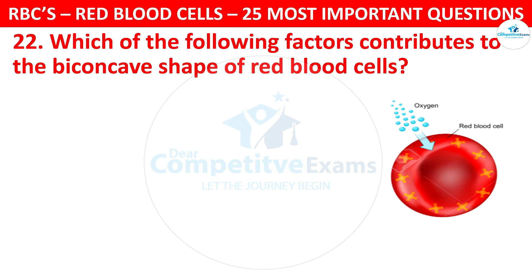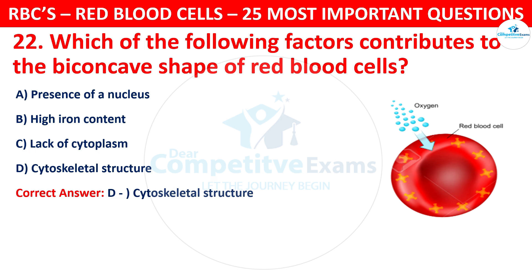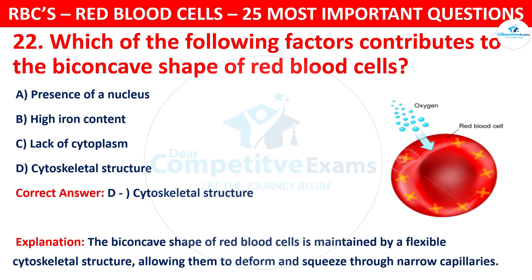Question 22. Which of the following factors contributes to the biconcave shape of red blood cells? The options are: presence of nucleus, high iron content, lack of cytoplasm, or cytoskeletal structure. The correct answer is D, that is cytoskeletal structure. The biconcave shape of red blood cells is maintained by a flexible cytoskeletal structure, allowing them to deform and squeeze through narrow capillaries.